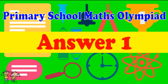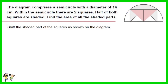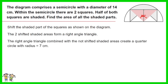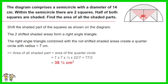Answer for Question 1. Shift the shaded part of the squares as shown on the diagram. The two shifted shaded areas form a right-angle triangle. The right-angle triangle combined with the not-shifted shaded areas creates a quarter circle with radius equals 7 cm. Thus the area of all shaded parts equals the area of a quarter circle, which is 7 × 7 × (1/4) × pi. The answer is 38 and a half centimeters squared.